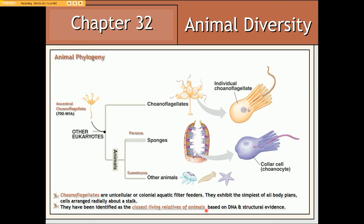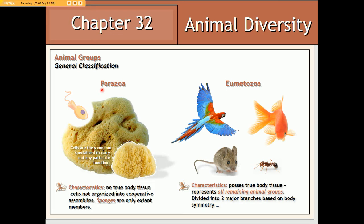All animal groups can be placed into two general categories based on their level of complexity. The parazoans lack true body tissue — in other words, their cells are not really differentiated; they're more or less all the same. The only living representative of the parazoans are the sponges, and their cells bear a striking resemblance to those of modern coanoflagellates. Eumetazoans include all other animal groups and consist of true tissues, whereby the cells in each tissue type are specialized for carrying out a specific body function.